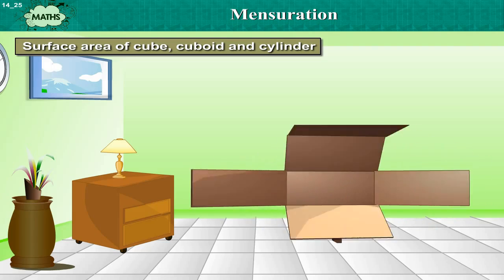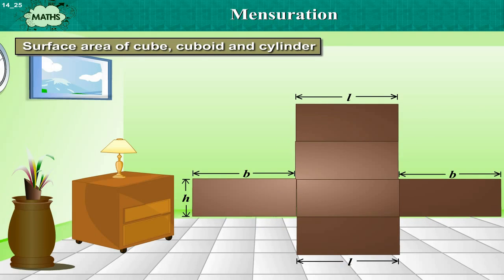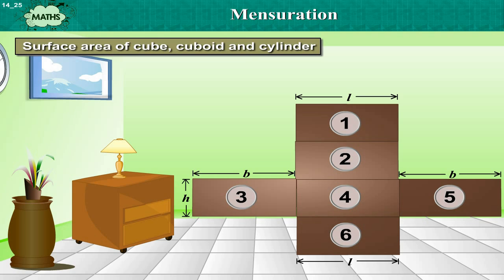Surface area of cube, cuboid and cylinder. If we cut open a cuboidal box and lay it flat, we can see it has 6 faces.